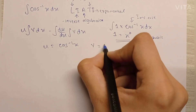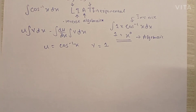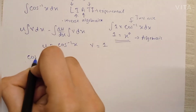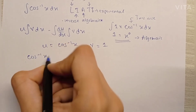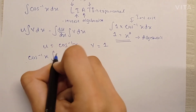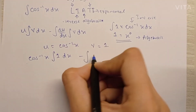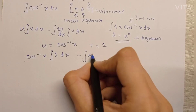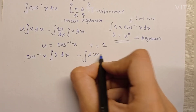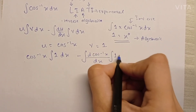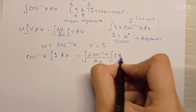The v term automatically becomes the algebraic term, which is 1 here. So now we can start integrating using the by-parts rule. We have: cos inverse x into the integration of 1 dx, minus the integration of the differentiation of cos inverse x into the integration of 1 dx.